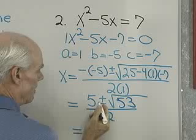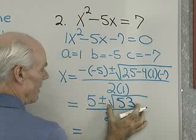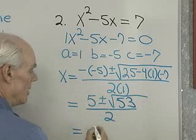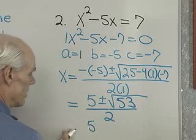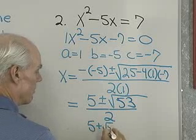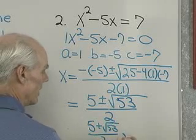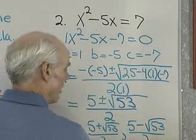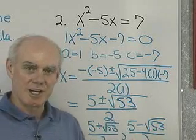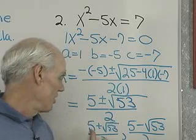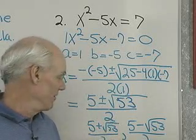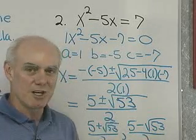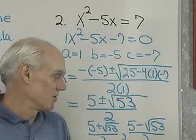And so I end up with 5 plus or minus the square root of 53. Now, can this be simplified? No. There are no perfect squares that are divisors of 53 that we can take out from under the radical. So I have my two solutions: x equals 5 plus square root of 53 all over 2, and the other solution is 5 minus square root of 53 all over 2. With a calculator, I can get a decimal approximation of these solutions.